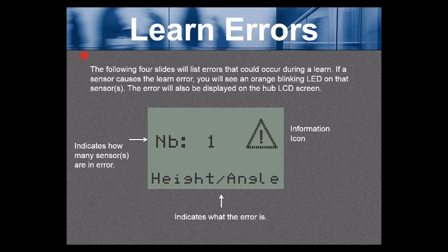Learn errors. The following four slides will list errors that could occur during a learn. If a sensor causes the learn error, you will see an orange blinking LED on that sensor or sensors in the event there's more than one sensor with an error. The error will also be displayed on the hub LCD, which is what we have on the middle of the screen.